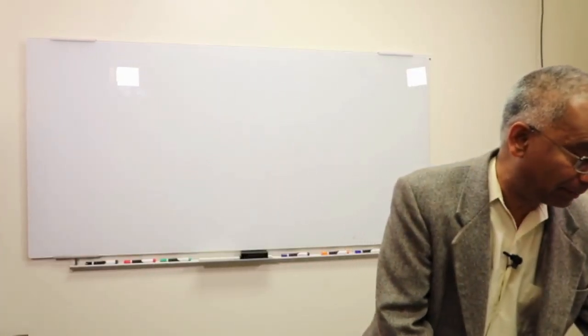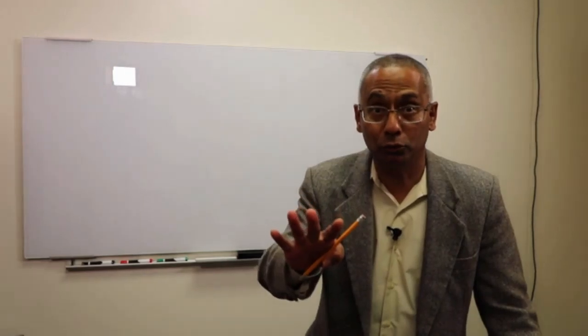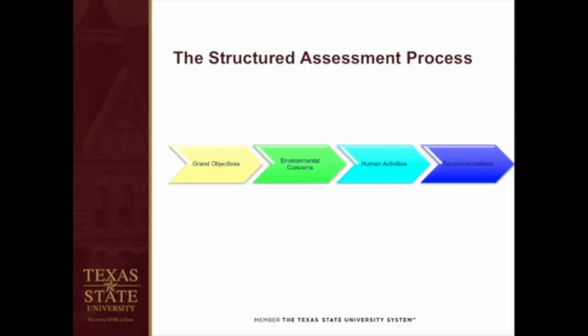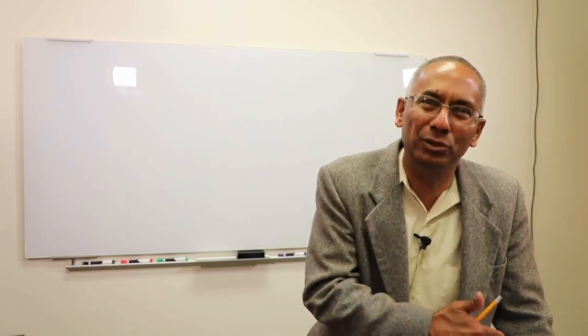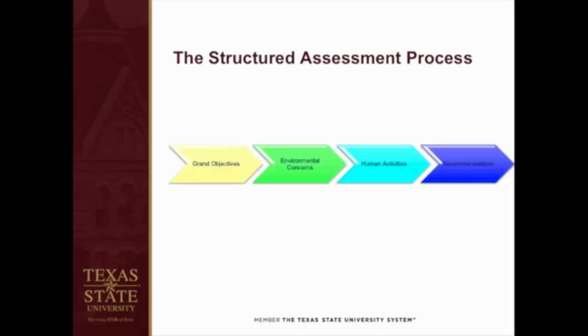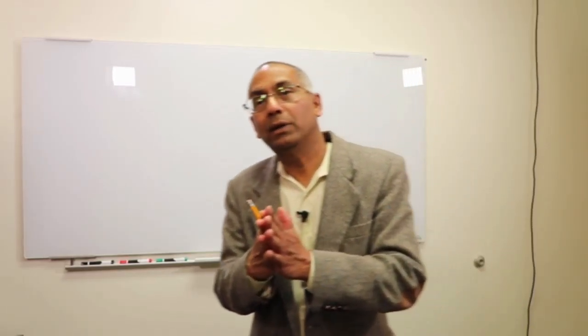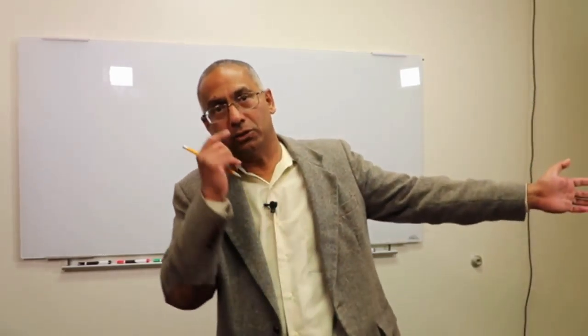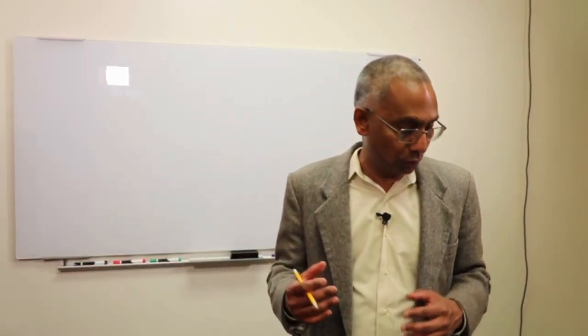So how we bridge this gap is we take this approach. We start off with the grand objectives. You saw those four. And then we ask ourselves, what are environmental concerns that would negate those objectives? What stands in the way from an environment standpoint in meeting those objectives? Once we know those environmental concerns, we ask what human activities cause those concerns? And then come up with recommendations. This is what engineers and scientists do. We look at human activities that threaten the environment, which in turn threatens those objectives, and say how can we reorder things? Not eliminate, but reorder things. And so that is what this course is all about.